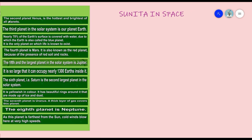The second planet is Venus. It is the hottest and brightest of all the planets. Among all eight planets, Venus is the most bright and shining, and it is also the hottest planet.